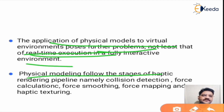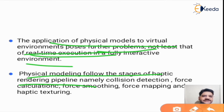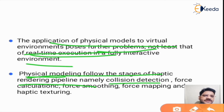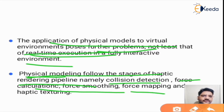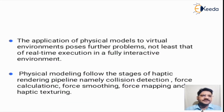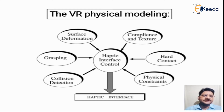Physical modeling follows the stages of the haptic rendering pipeline. In the haptic rendering pipeline, there are three stages. Similarly, the stages of physical modeling consist of collision detection, force calculations, force smoothing, force mapping, and haptic texturing. These stages are similar to the haptic rendering pipeline.